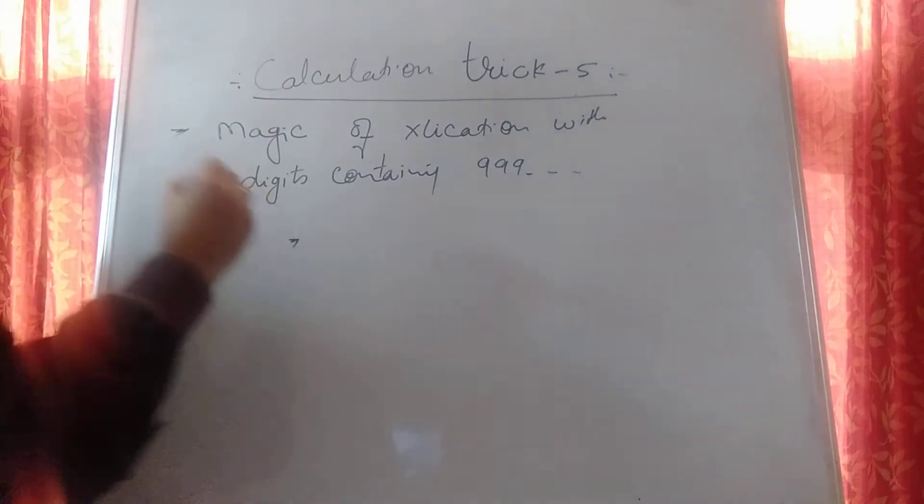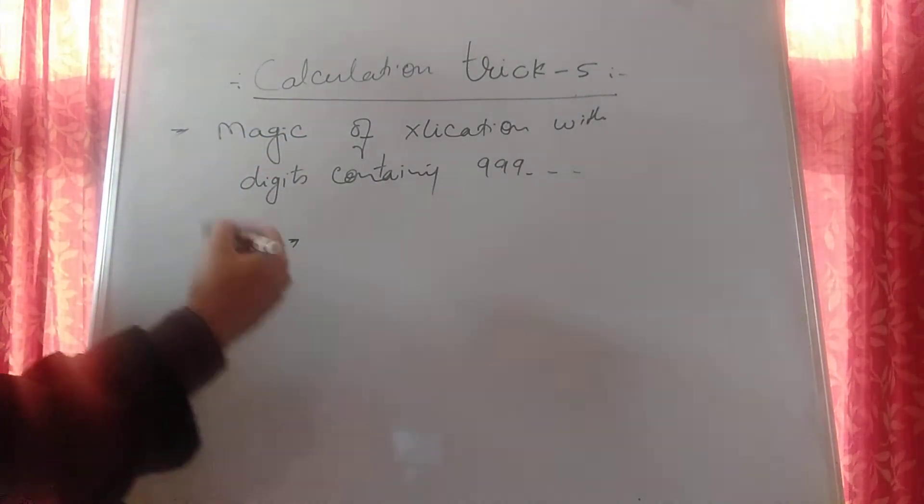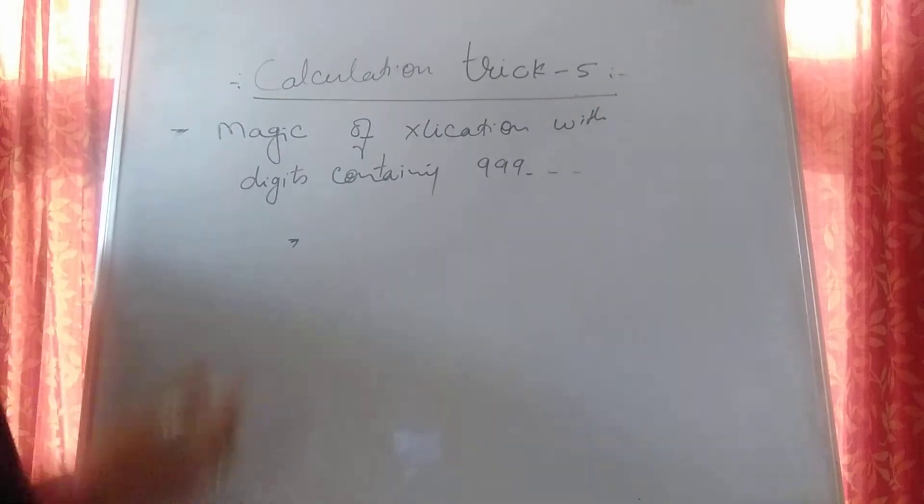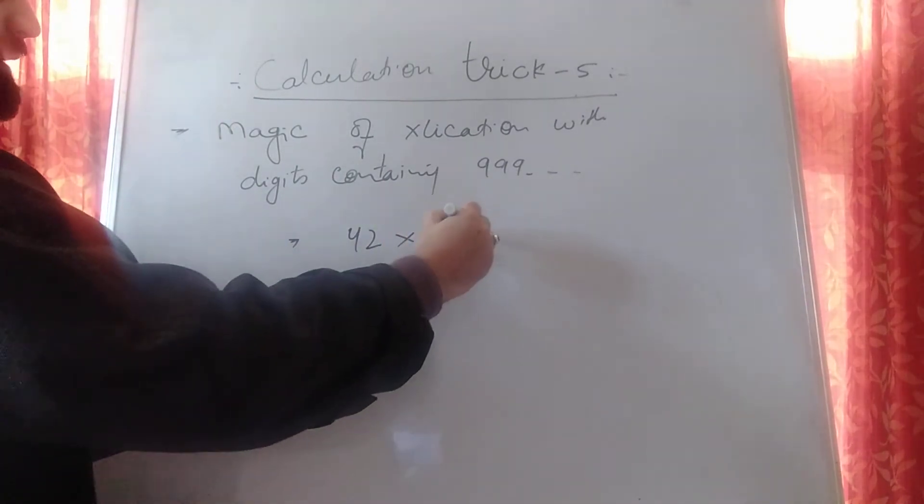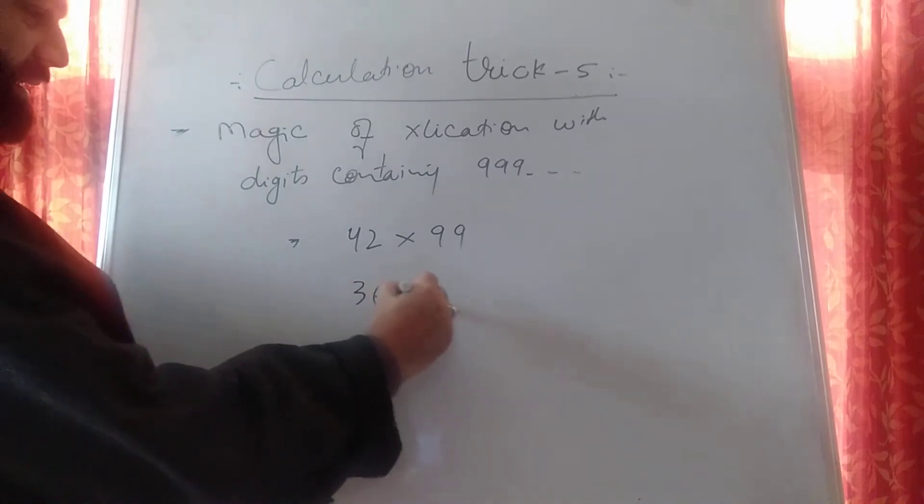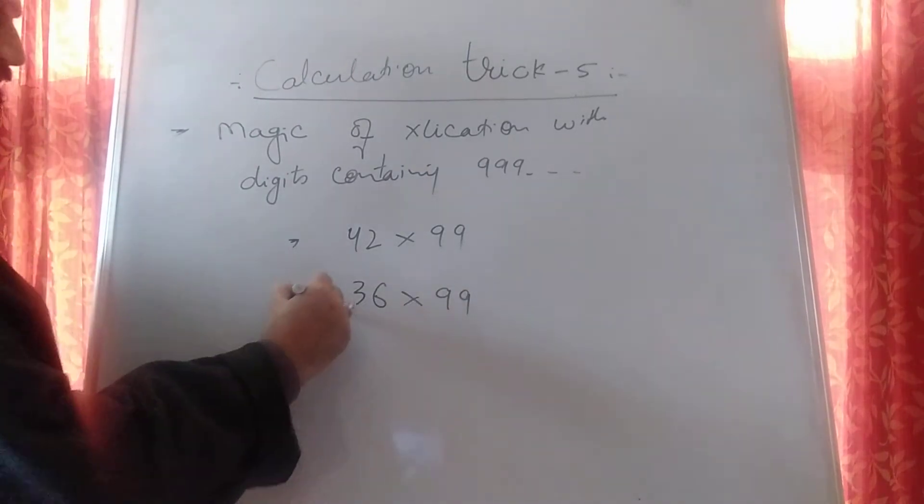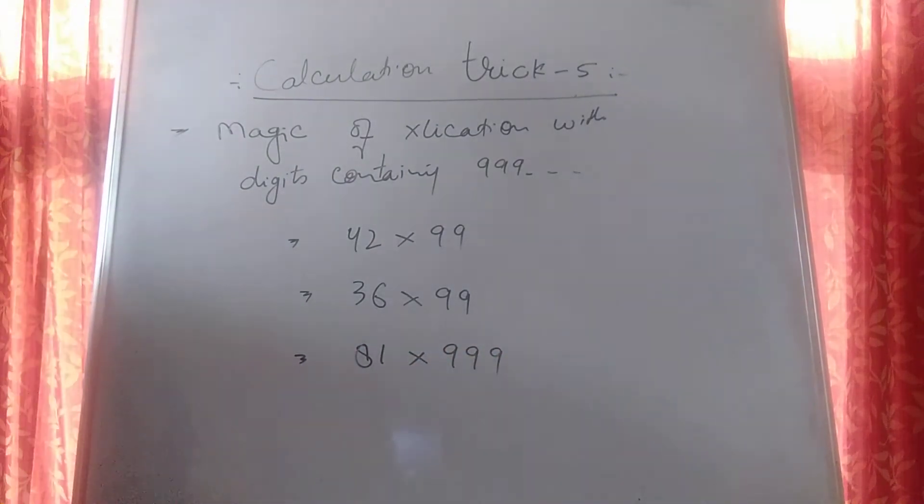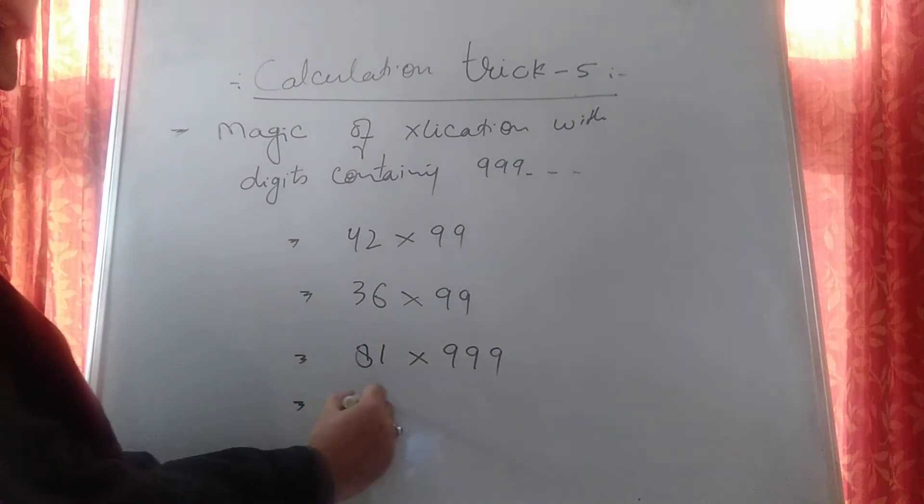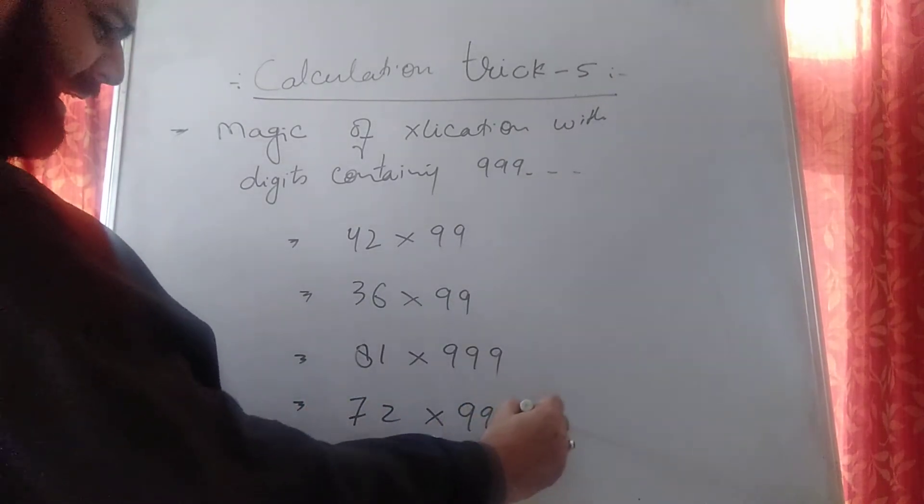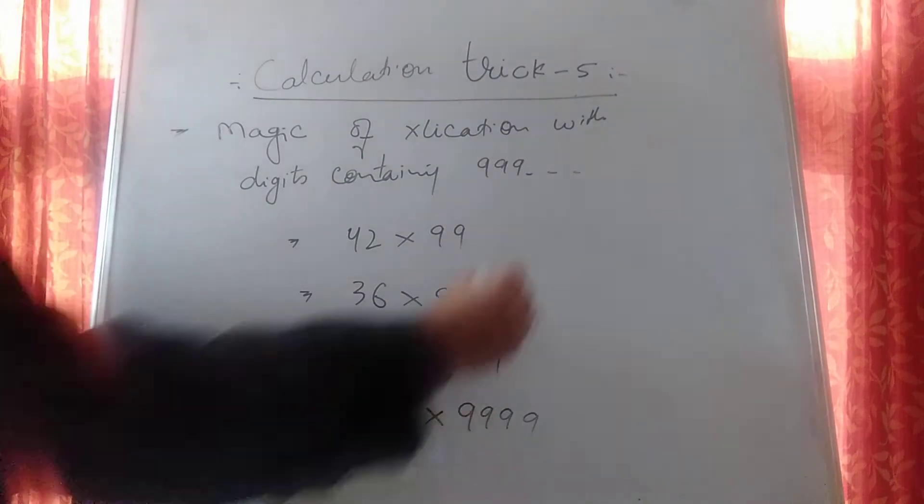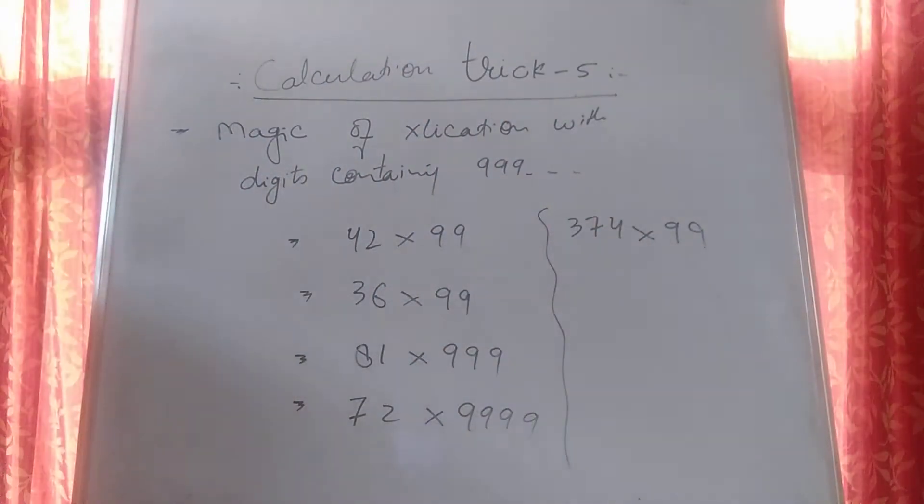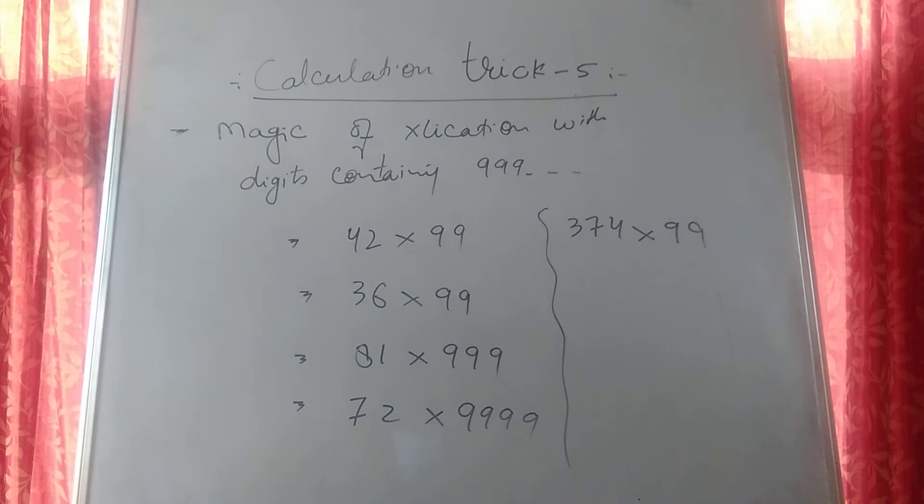That is, in today's very important calculation trick lecture, how to multiply any number with a number that only contains 9 as digits. 42×99, 36×99, 81×999, 72×9999. Any number like 374×99. That's what today's magical calculation trick is.